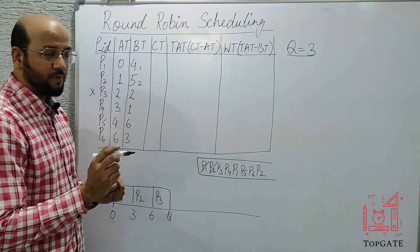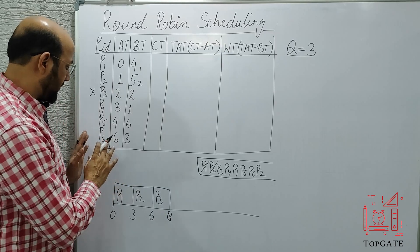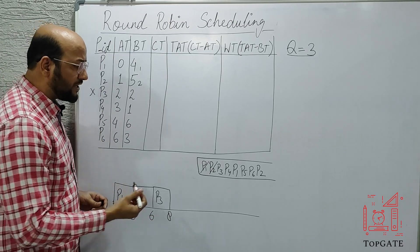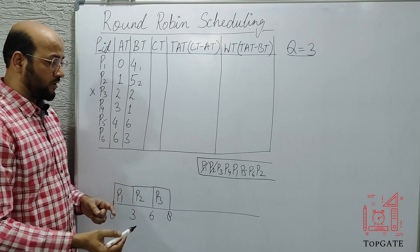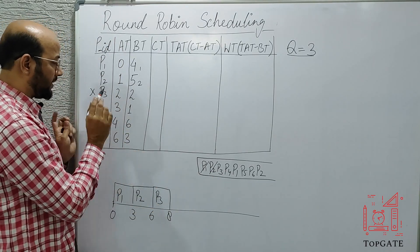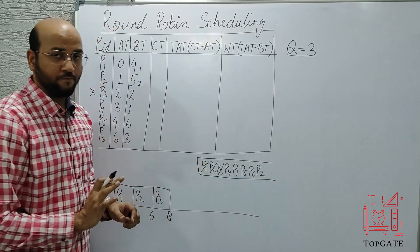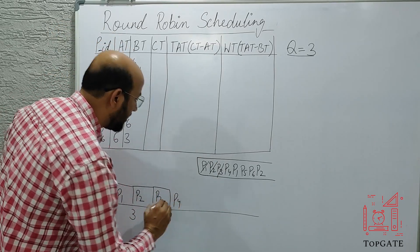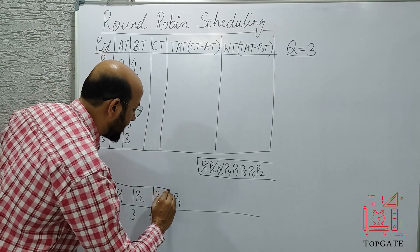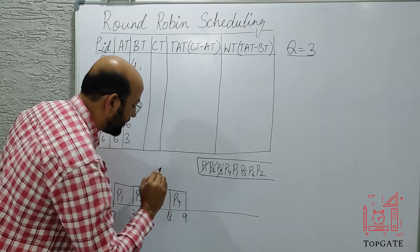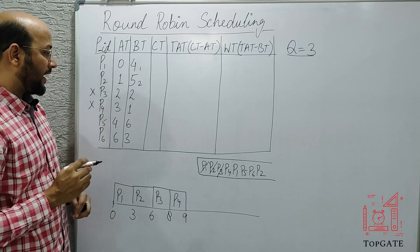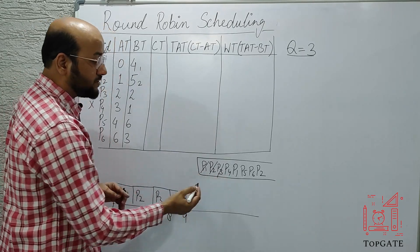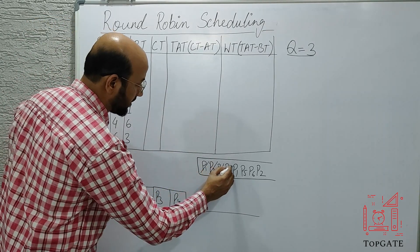At time eight, since every process has already arrived, I don't need to check for new arrivals. P3 has completed its work and terminated, so I cut it and don't write it again. The next process at the head of the ready queue is P4. P4's requirement is one, so it starts at eight and ends at nine. P4 also completes its work, terminates, and goes out of the system.